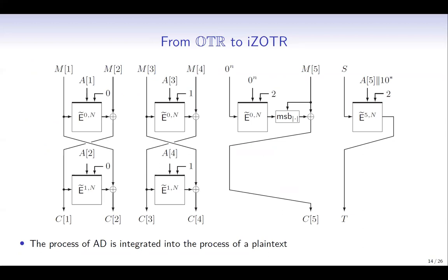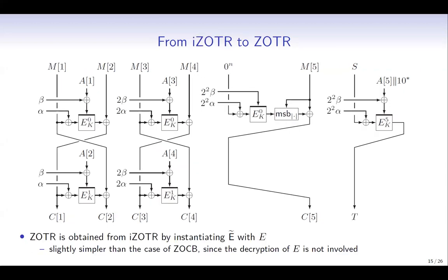This figure describes IZ-OTL. It uses a two-round Feistel network with a large tweakable block cipher tilde-E. The process of A1 is here, A2 is here, A3 is here, and so on. We see that the process of AD is integrated into the process of plaintext. Z-OTL is obtained from IZ-OTL by instantiating the big tweakable block cipher tilde-E with the tweakable block cipher E. The instantiation is slightly simpler than the case of ZO-CB because the decryption of the tweakable block cipher is not involved.